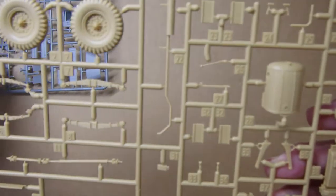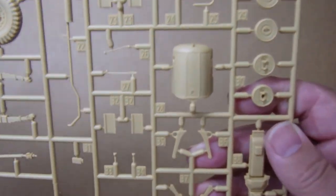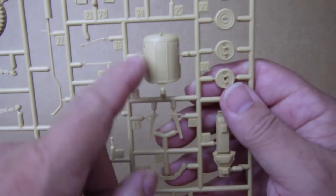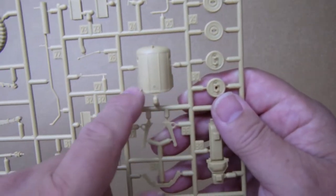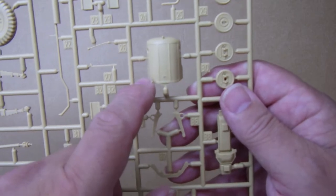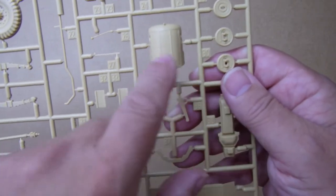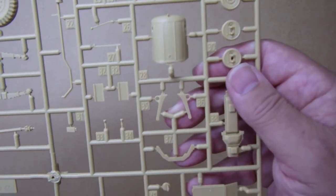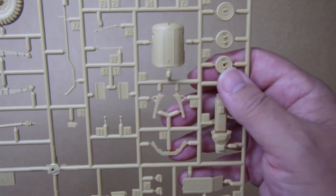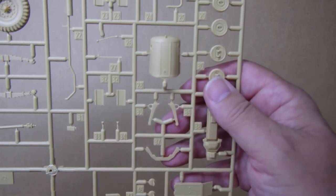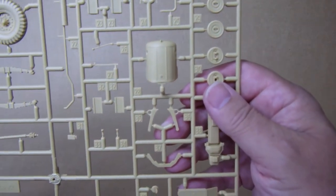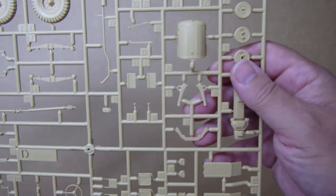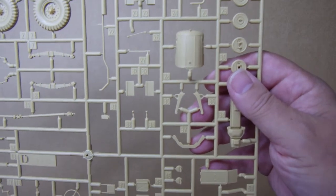The Airfix one has, if you like, a more rounded sort of shape, notwithstanding the grills there. I think from the pictures that I've seen, I think we'll have to draw our own comparisons. Now what I'm going to do is cut the Airfix one off the sprue and the Gecko one off the sprue and let's have a closer look at them together.